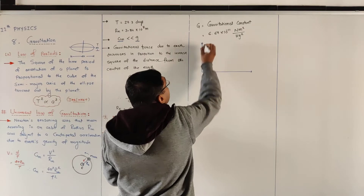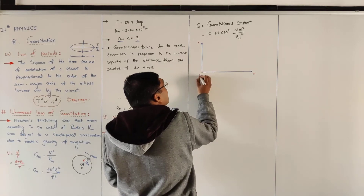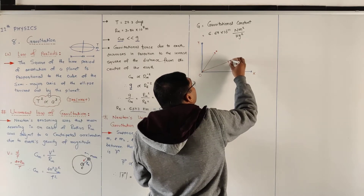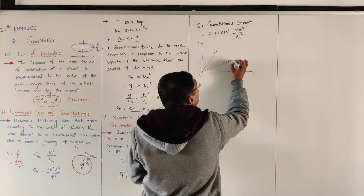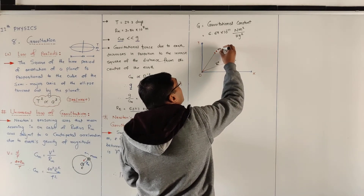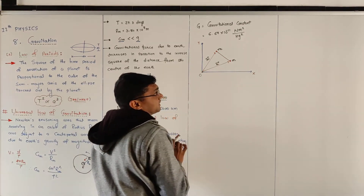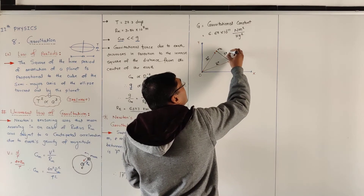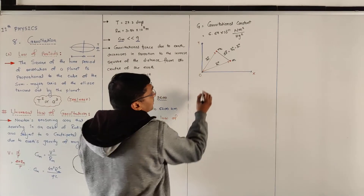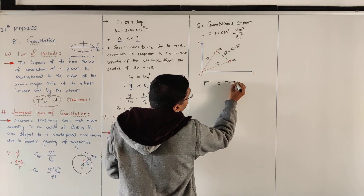Now, how can we write forces vectorially? Here we have x and y coordinates. This is the origin. We take two point masses M₁ and M₂. M₁ has position vector R₁ and M₂ has position vector R₂. The distance between them is ΔR, where ΔR = R₂ − R₁. So when writing vectorially: F = G M₁M₂/|R|² multiplied by the unit vector R̂.